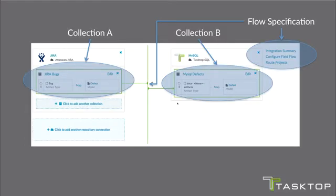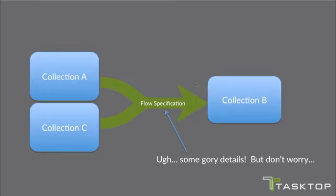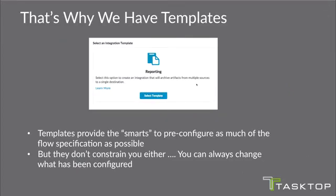Here's a quick screenshot of our system showing the definition of an integration with a collection on one side, a collection on the other, and a flow specification. You might be thinking: what does a flow specification really mean? There are some gory details to it, but that's why we have the last concept — templates. Templates provide the smarts to pre-configure as much of the flow specification as possible, but they don't constrain you; you're always able to change what's been configured. So if the purpose is reporting, we have a template that will help set up the flow specification and collections for you.